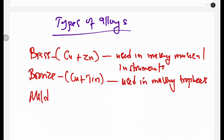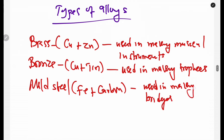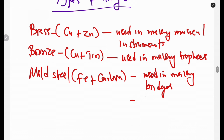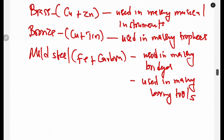We also have mild steel, which is an alloy of iron and carbon. It is used in making bridges, boring tools, and automobile bodies.